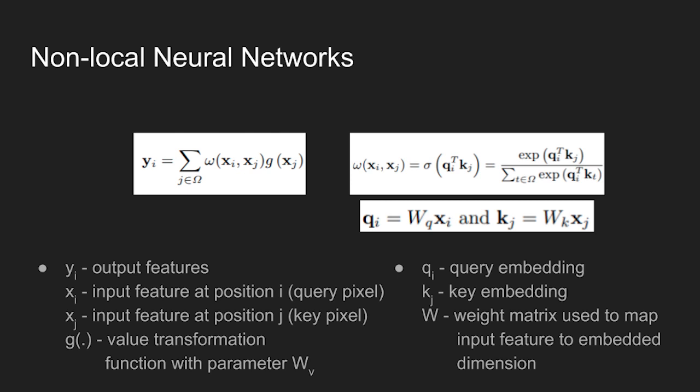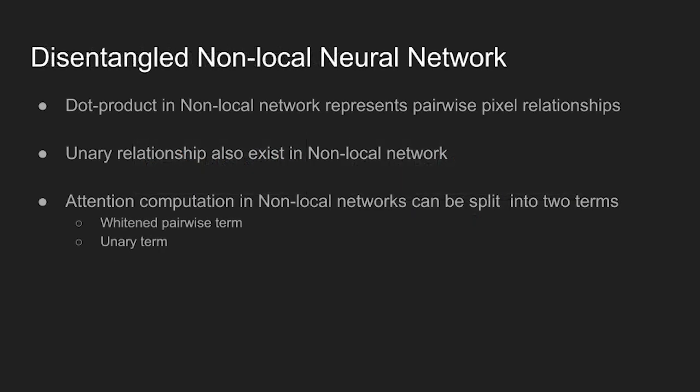In other work, like GCNet, it was found that nonlocal blocks frequently degenerate into a pure unary term in several image recognition tasks, where each key pixel in the image has the same similarity with all query pixels. Based on the observation, the authors claim that there could exist not only pairwise relationship between the pixels, but there could also be an unary meaning as well.